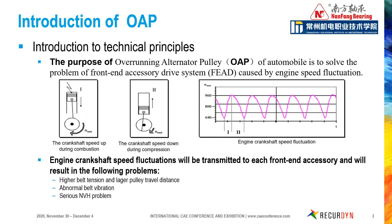In order to simplify the names, we use OAP for Overrunning Alternator Pulley and FEAD for Front End Accessory Drive System. As everybody knows, the automobile engine working cycle consists of intake stroke, compression stroke, work stroke, and exhaust stroke. Engine crankshaft speed fluctuates up and down during fuel combustion and gas compression, and this speed fluctuation is transmitted to generators through the belt drive system.